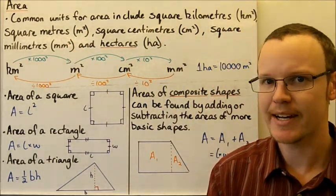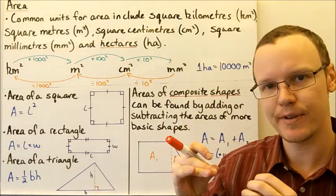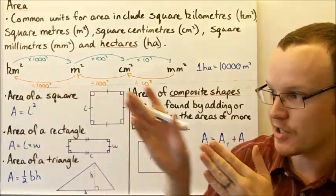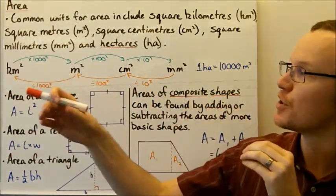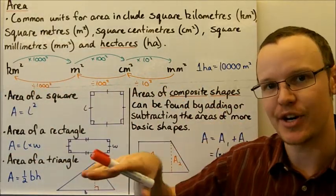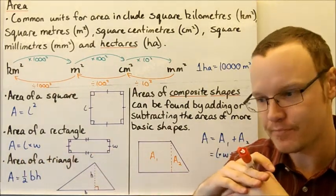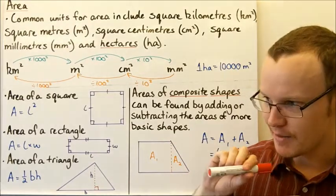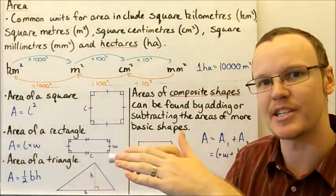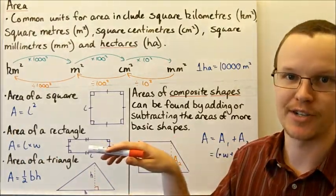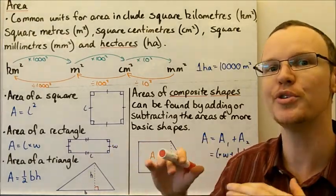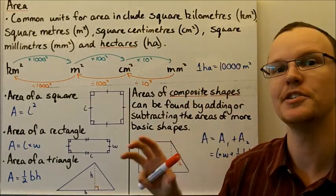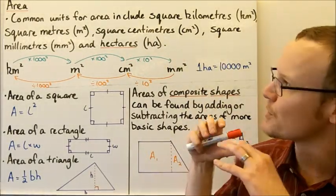When we start talking about area, we move from a one-dimensional idea of length — length is along one dimension, it's in one direction — to area, which spreads out over a larger field and works in two dimensions. So we've got two directions, two dimensions, and these are the units we can use to measure those two dimensions.